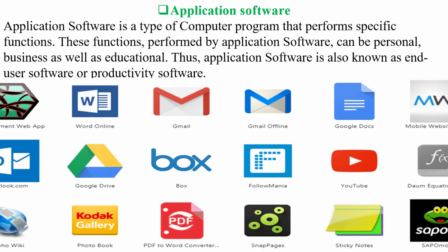Another example of computer software is application software. Application software is a type of computer program that performs specific functions. These functions can be personal, business, as well as educational. Application software is also known as end user software or productivity software.